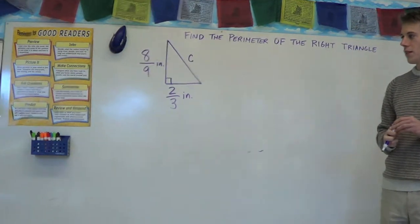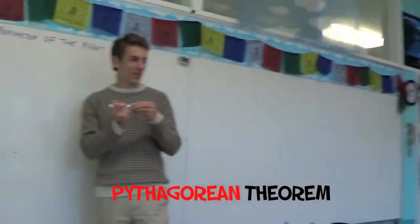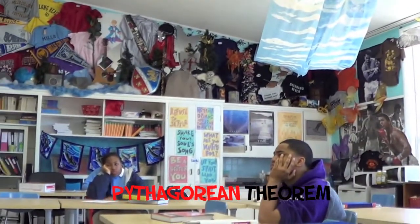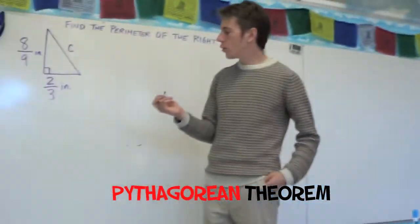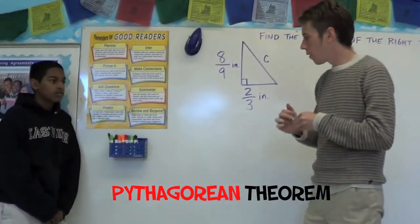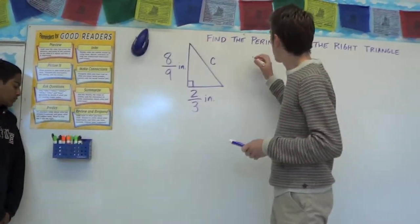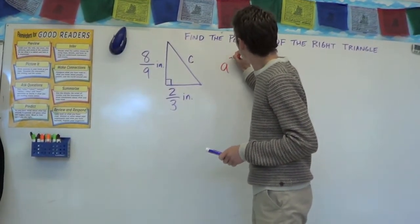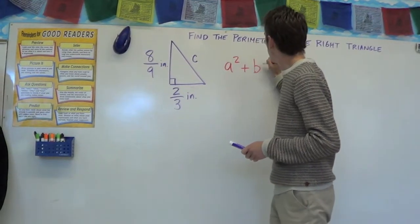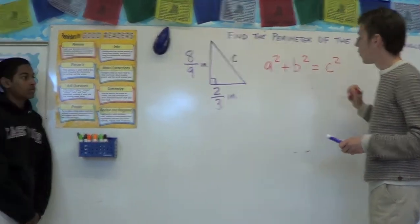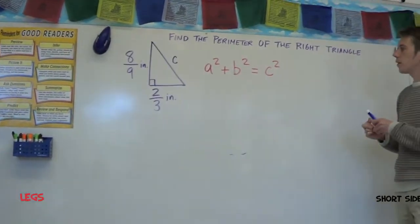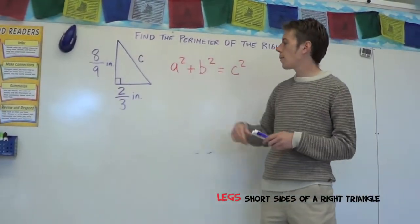Pythagorean theorem. Which states that A squared plus B squared equals C squared, where A and B are the legs of the triangle and C is the longest side or the hypotenuse.